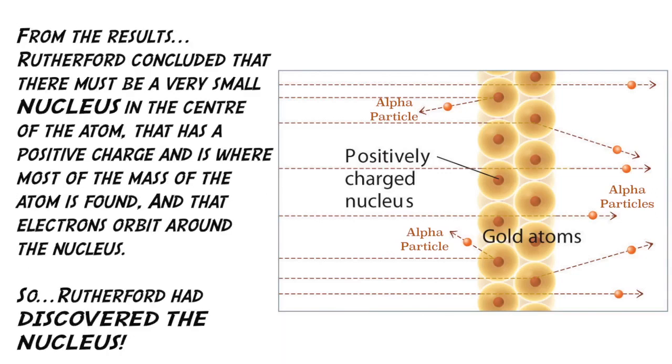From the results, Rutherford concluded that there must be a very small nucleus in the center of the atom, and that has a positive charge, and is where most of the mass of the atom is found, and that electrons orbit around the nucleus. So, Rutherford had discovered the nucleus.